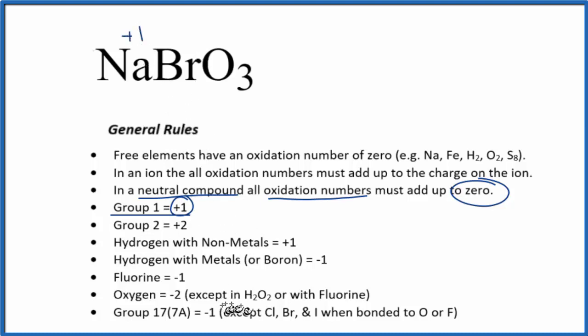Bromine, normally bromine in group 17, sometimes called 7A, the halogens, normally it's minus one, except when it's bonded to oxygen and fluorine. Here the bromine and the oxygen, they're bonded together, so we really can't tell the oxidation number. Let's just call it X.